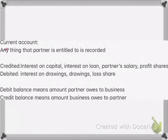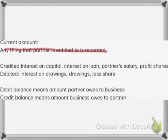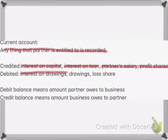The current account records anything that a partner is entitled to, including interest on capital, loan, drawings, profit share, and loss share. Items credited in the current account include interest on capital and interest on loan. Items debited in the current account include interest on drawings and the loss share. If there is a debit balance in a current account, that amount means the partner owes that amount to the business, making it a liability for the partner.